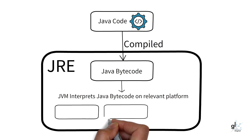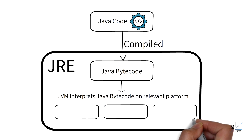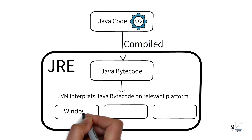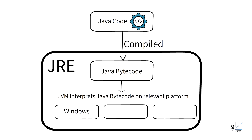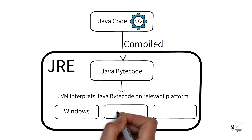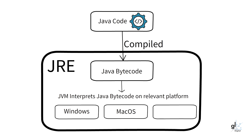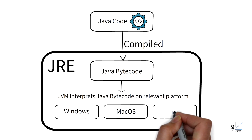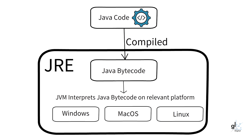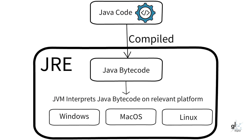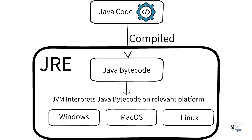For example, if a Java application is running on a Windows platform, the JVM interprets the bytecode so that the code is appropriately executed on a Windows platform. If the underlying operating system is, for example, Linux, the JVM will interpret the bytecode so that it can be appropriately executed on the relevant Linux platform.